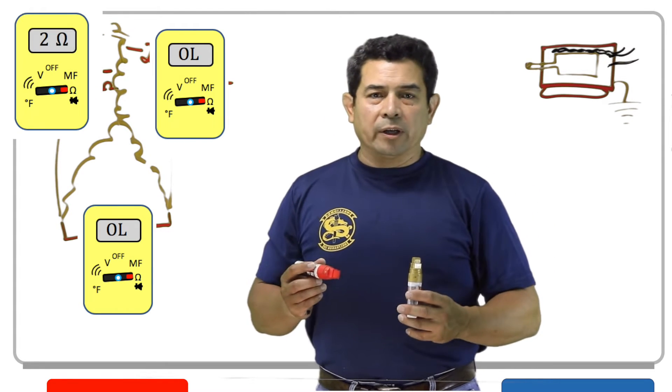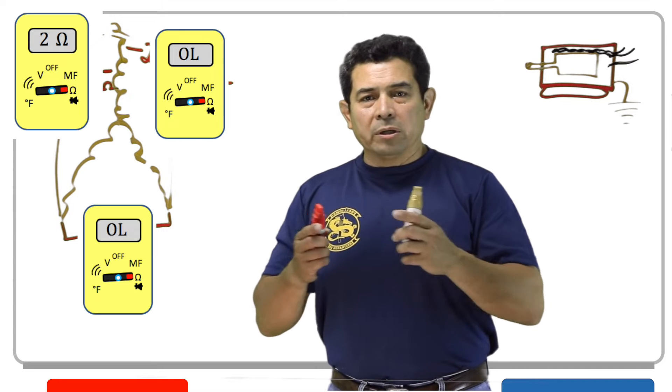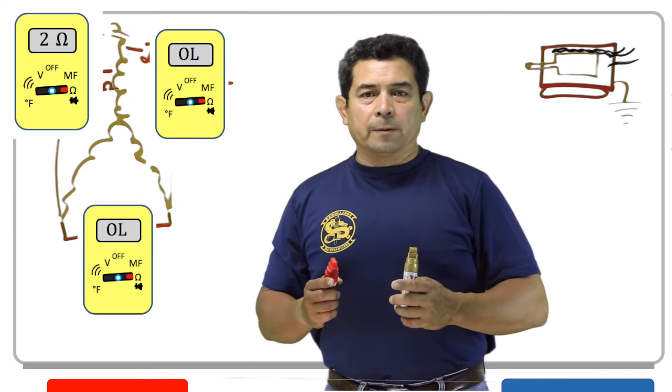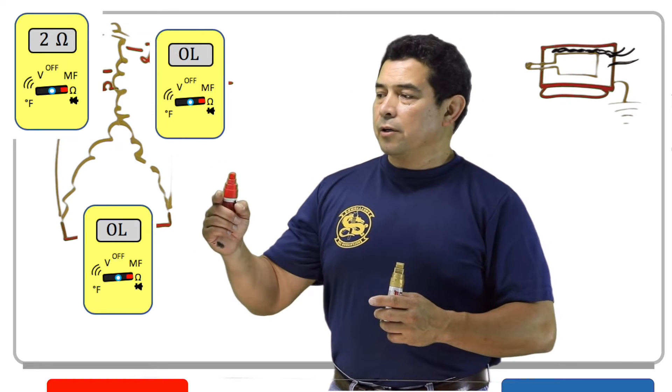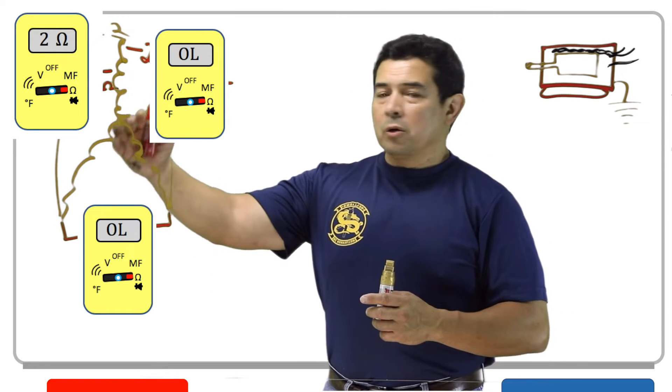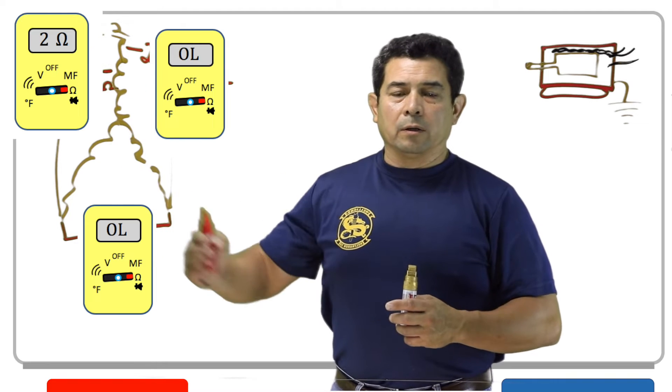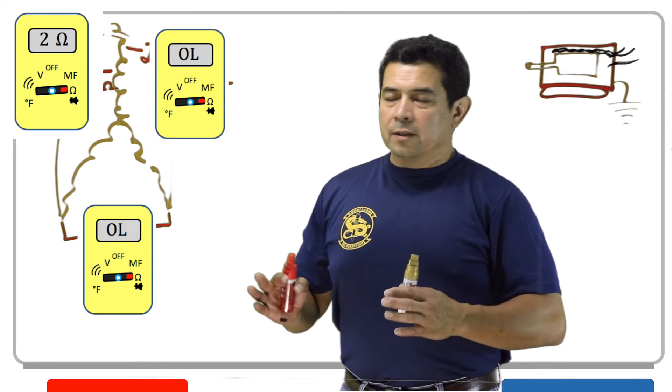Some people say open lead, open line, whichever, same thing. Your meter will say OL on it, which means that they cannot get through. It cannot get through there, so now this motor is only going to run on this winding, and it's not going to go at all.